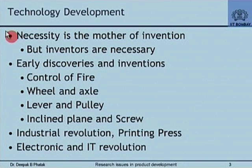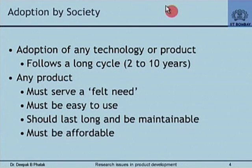The electronic and IT revolution is something everybody is familiar with, and the example I will take today is an IT and electronic product. Generally, there is a long cycle followed in adoption of any technology. It is not that a product is developed, manufactured, and released and society adopts it quickly. It takes a long time, and the penetration of a product into larger and larger segments of society may take a really long time.